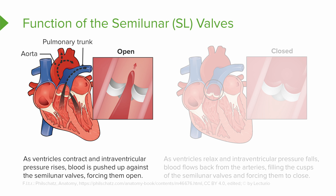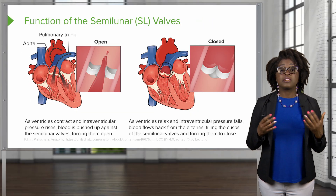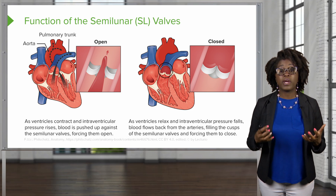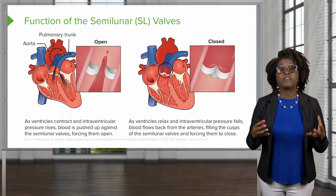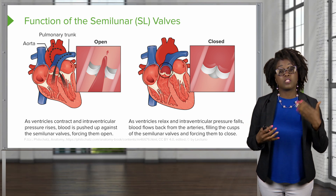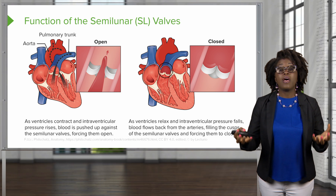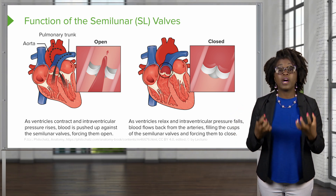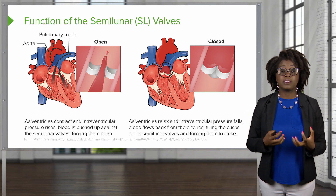So how do the semilunar valves function? As the ventricles contract and the intraventricular pressure rises, blood is going to be pushed up against these semilunar valves, forcing those valves open. Subsequently, as the ventricles relax and the intraventricular pressure goes back down, blood is going to flow back from the arteries, such as the pulmonary trunk or the aorta. And instead of flowing back into the heart, they're going to fill the cusps of the semilunar valves, forcing them to close.